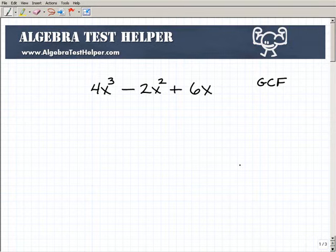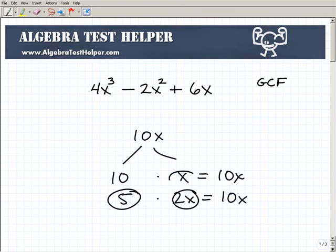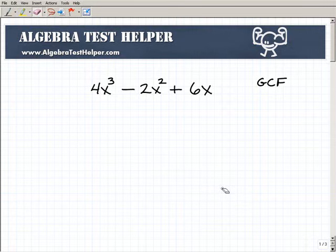Or you could maybe write this as 5 times 2x. That also gets you back to 10x. So these here would be considered factors, and you can see, this is a real basic example. There's a number of different ways to, a number of different approaches to factoring something, and there are oftentimes multiple ways we can write our factors.